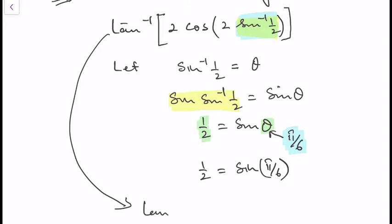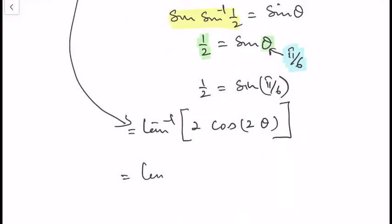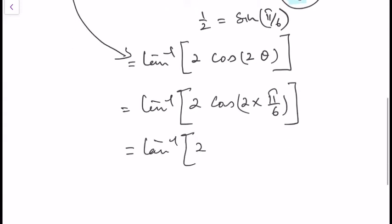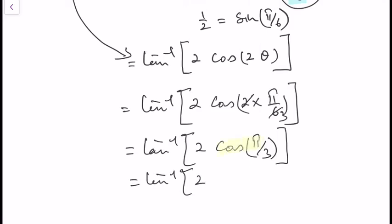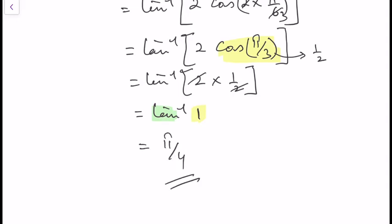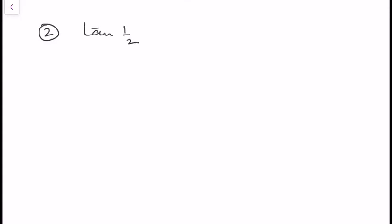Therefore, tan⁻¹(2cos(2θ)) = tan⁻¹(2cos(2 × π/6)) = tan⁻¹(2cos(π/3)). Now cos(π/3) = 1/2, so 2 × 1/2 = 1, giving tan⁻¹(1). Since tan(π/4) = 1, we get tan⁻¹(1) = π/4. In the second example, let's find the value of tan(1/2 · sin⁻¹(2x/(1+x²)) + cos⁻¹((1−y²)/(1+y²))).